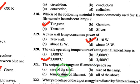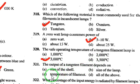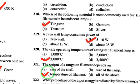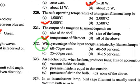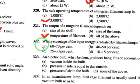The output of a tungsten filament depends on the temperature of the filament — this is the same type of question discussed at the start.